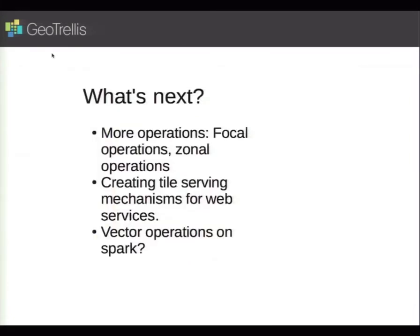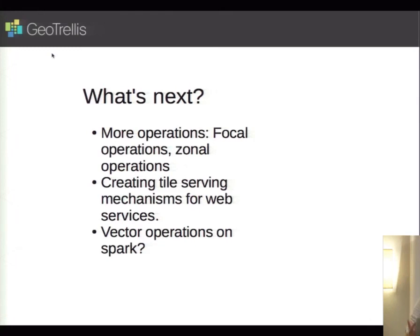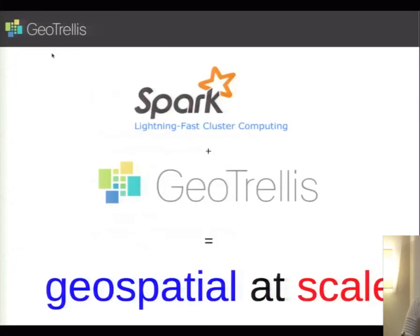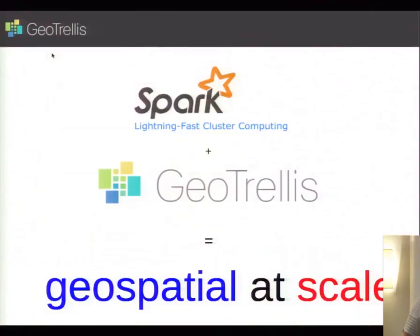As for what's next for GeoTrellis Spark, we just need to flesh it out — it's in an infancy stage. We need to add more operations, including focal operations that deal with tile neighborhoods, which is a tricky distributed systems problem that we did solve in the Akka engine and need to bring to Spark. We're also working on creating web services that allow filtering tiles down for city-scale computations on large worldwide datasets, and possibly vector operations on Spark. We're trying to solve the geospatial problem at scale, and there's no open source solution that nails this — so we're proposing a direction combining GeoTrellis and Spark.